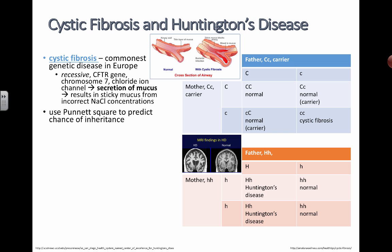We can use a Punnett square to solve this just like any other example. In this case, we have a father who is a carrier — carrier means heterozygous, meaning the father doesn't actually show the traits of the disease. If the mother is also a carrier and heterozygous, we separate their alleles. When the mother produces eggs, she can't put both alleles into one egg, so it splits by the law of segregation. You can get a big C or a little c, combining with either allele from the father. Only when you inherit two copies of the recessive allele of the CFTR gene do you end up with a child who actually has cystic fibrosis — so when both parents are carriers, there's a 25% chance of that.